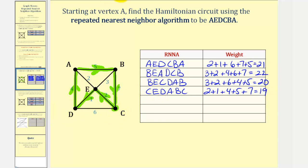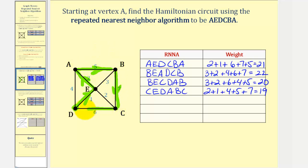Starting at vertex D, the nearest vertex is E since edge DE has a weight of 1. From E, we can visit A or C — both edges have the same weight, so we'll have two circuits. First visiting A: from E to A, then B, then C, then back to D. The circuit is DEABCD with a total weight of 1 + 2 + 5 + 7 + 6 = 21.